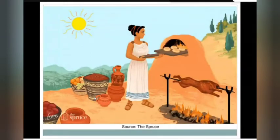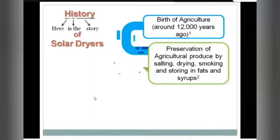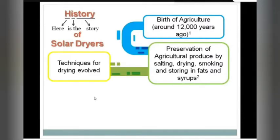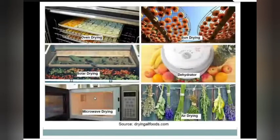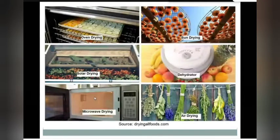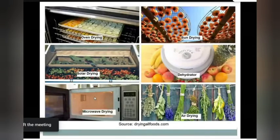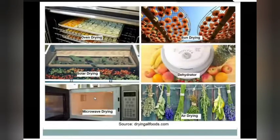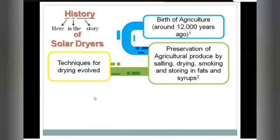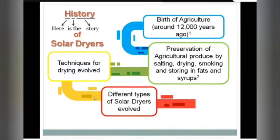People started salting their food, drying it, smoking it, and storing it in fats and syrups. Ancient Greek people were very famous at this. Through these processes, people evolved the art of drying. Nowadays we have different techniques: oven drying, sun drying, solar drying, dehydrator, microwave drying, air drying. The two most famous are solar drying and sun drying, partly because some people had the perspective that the sun is a god — Surya Dev — who would kill all evils inside food. This scientific and religious perspective led to a lot of experimentation.